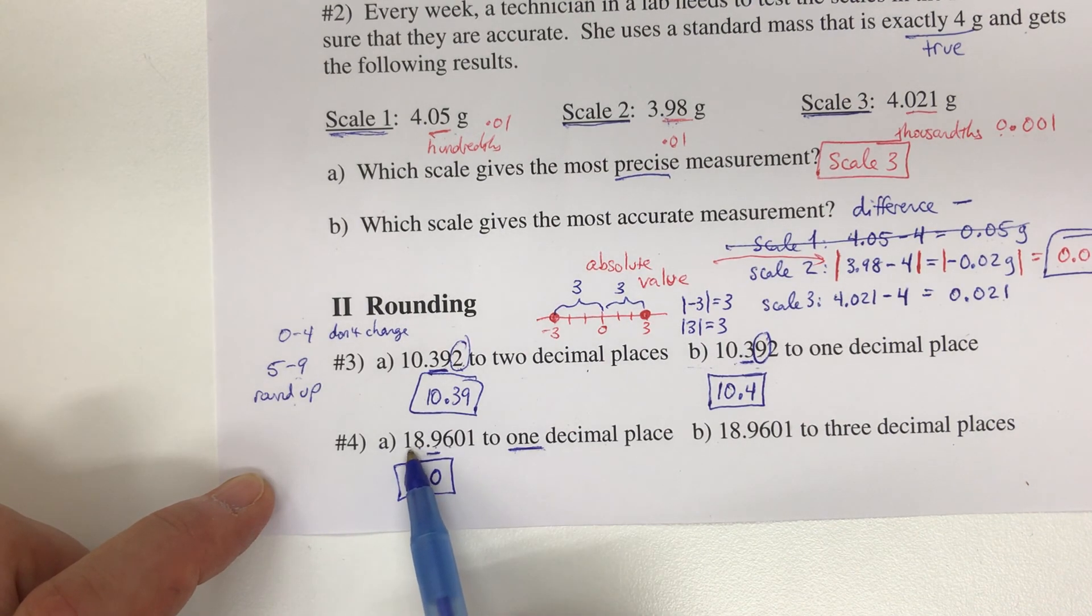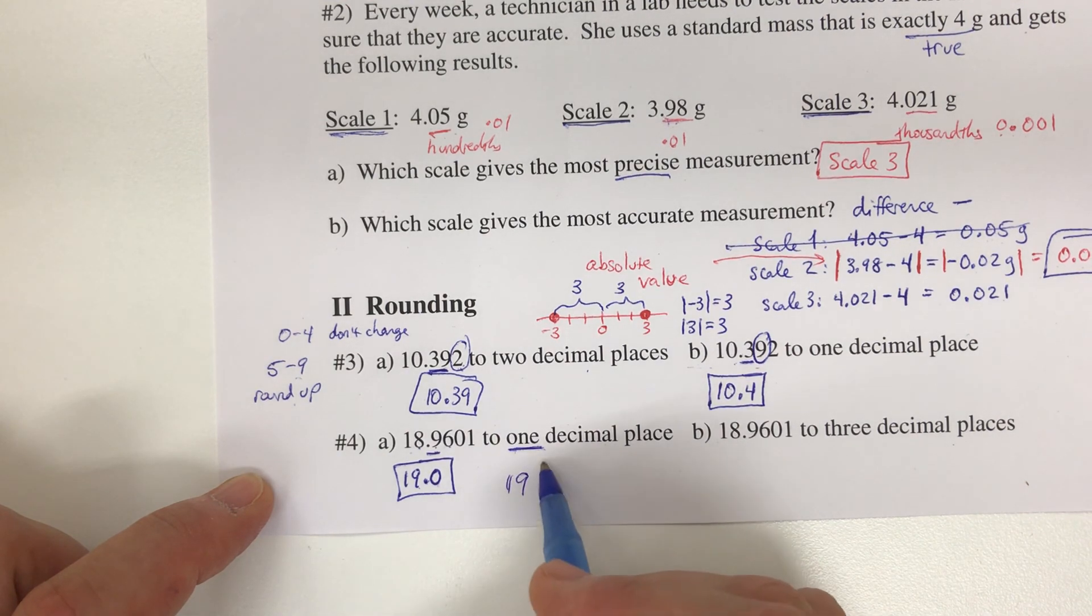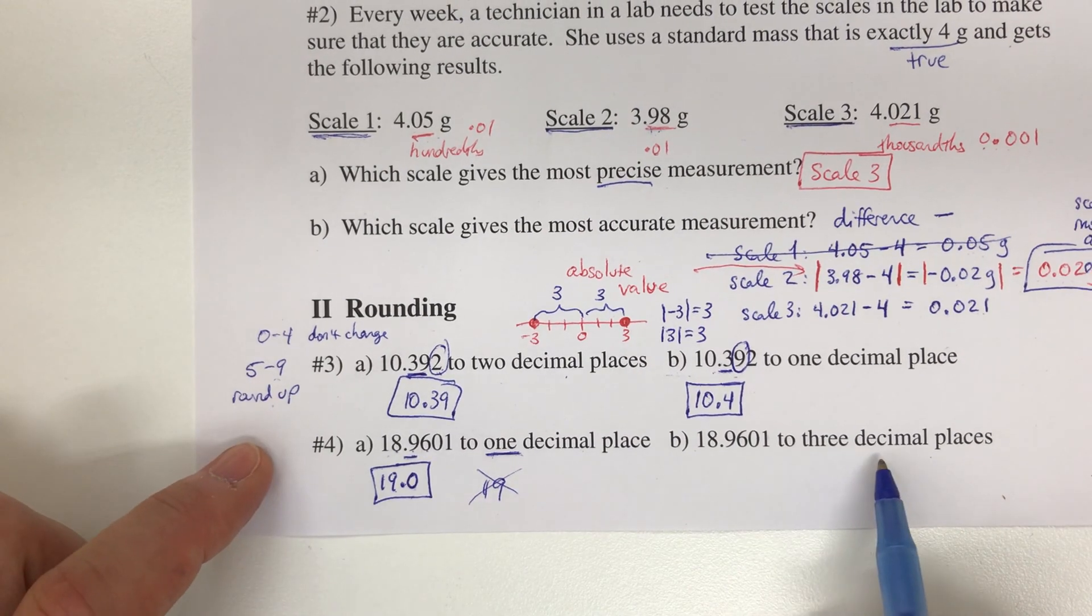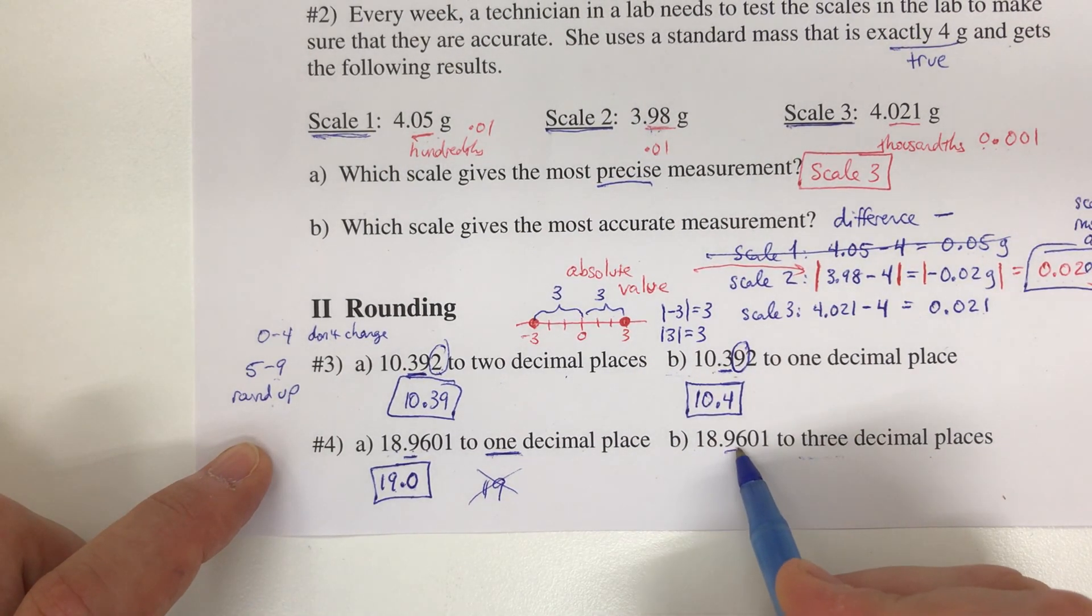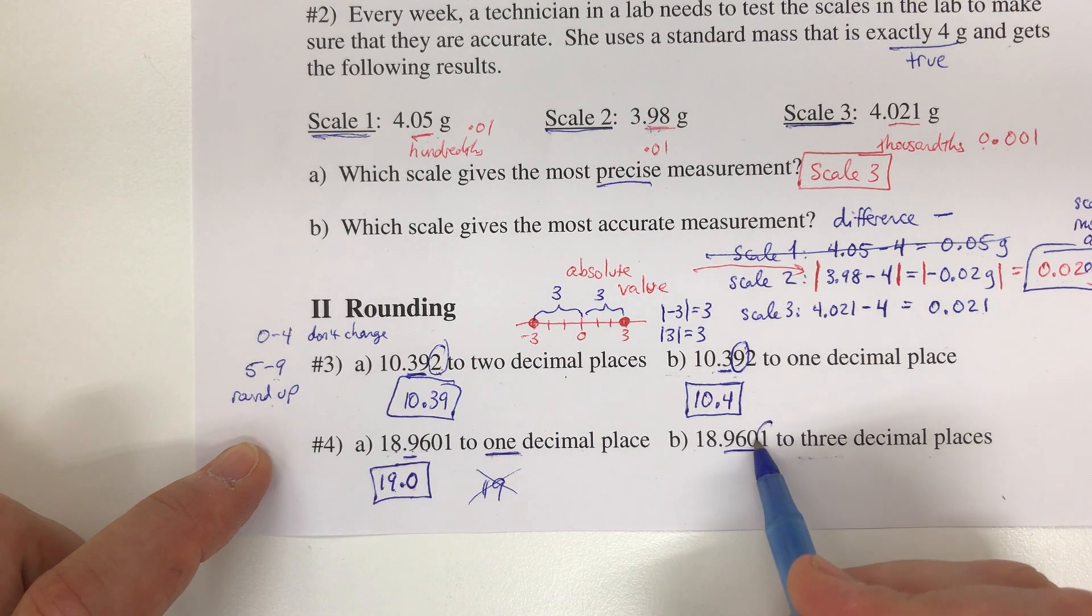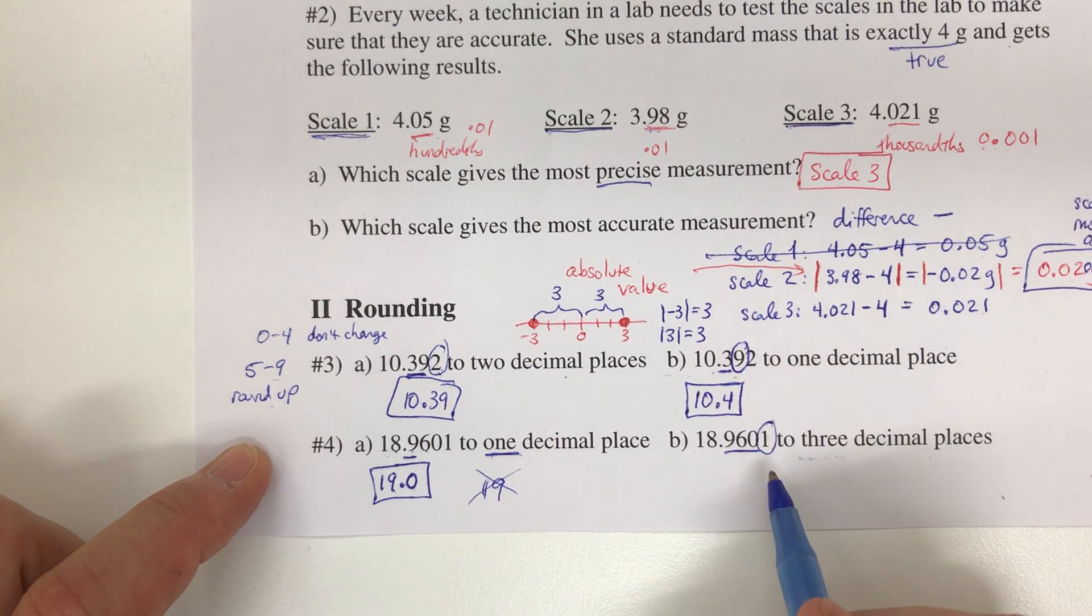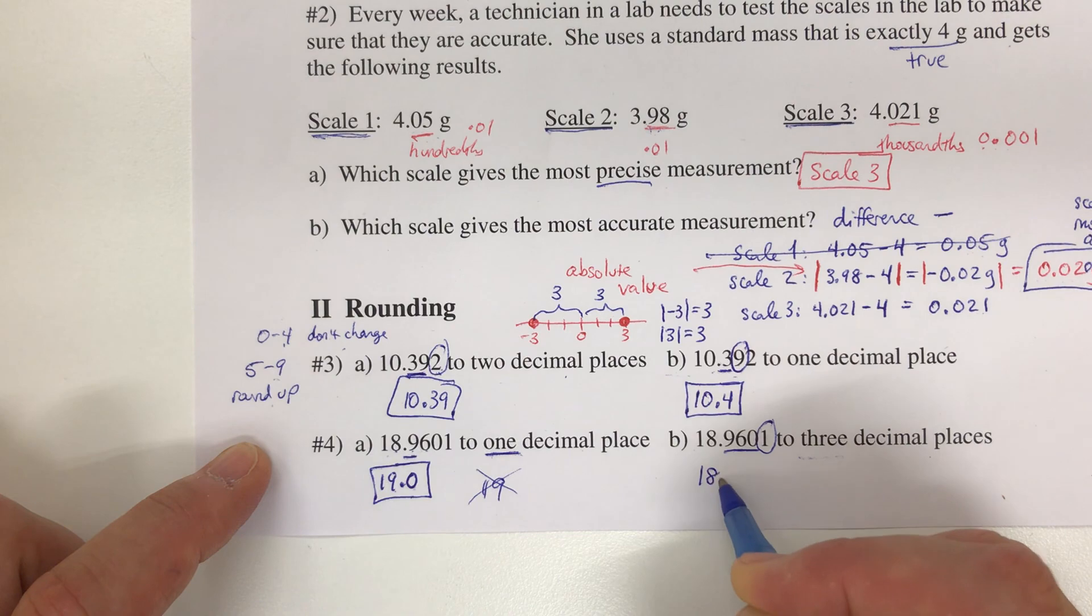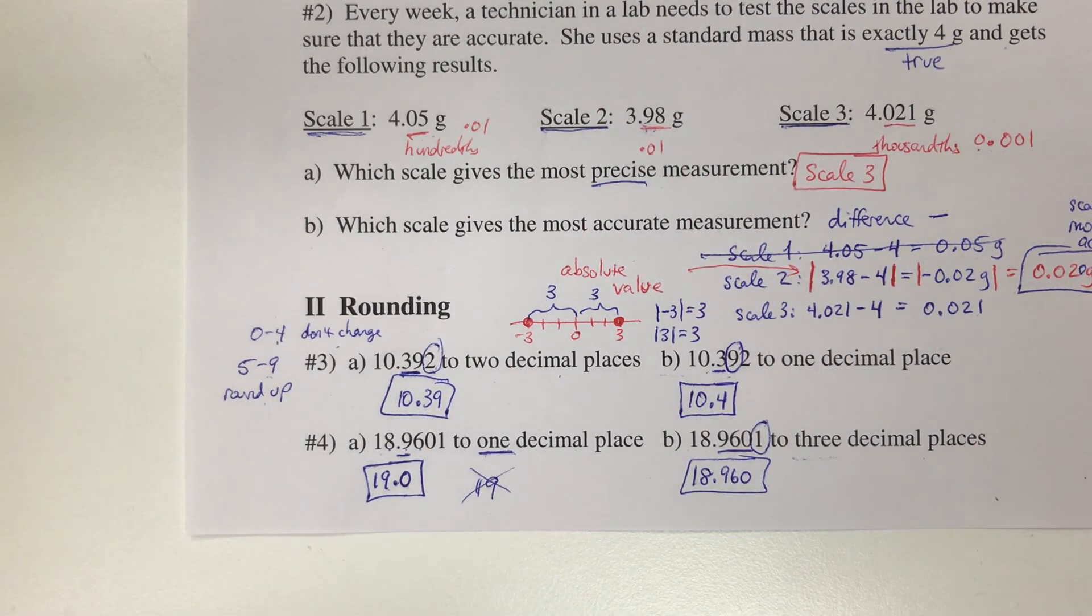If you think of money again, 18.96 dirhams is basically 19 dirhams, but because they said one decimal place, I will put the 0 there because I need one decimal place. I wouldn't just say 19 and stop—I want 19.0. For the last one, to three decimal places: 18.960. We go to the next value, which is a 1. Between 0 and 4, we don't change, so this is 18.960. That is the end of the notes.